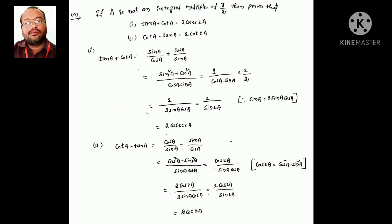We want 2cosec2a, so multiply and divide by 2. Then we get 2/(2sin a·cos a). Since 2sin a·cos a = sin2a, the result is 2/sin2a = 2cosec2a.